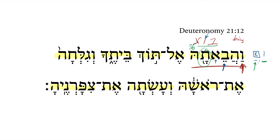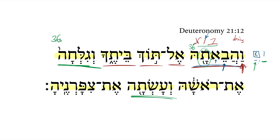And you bring her to the midst of your house — so this completes the veqatal forms that are in this hypothetical situation. We switch now; we still have veqatal forms in the next two, but notice they become third feminine singular forms. Both of these are third feminine singulars, and so this is where we get the shift to 'then.'